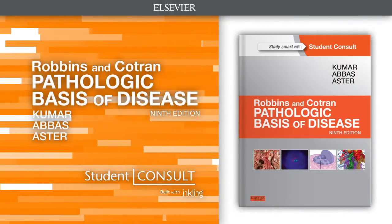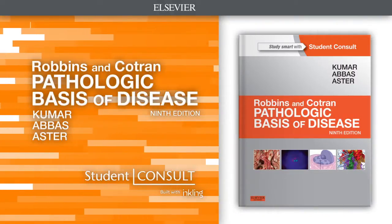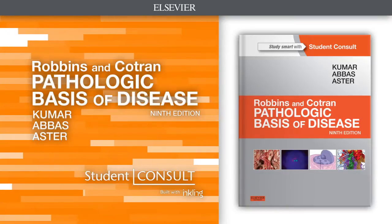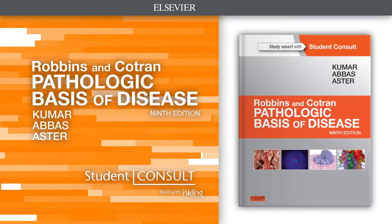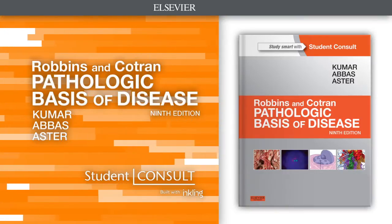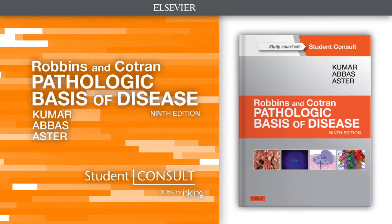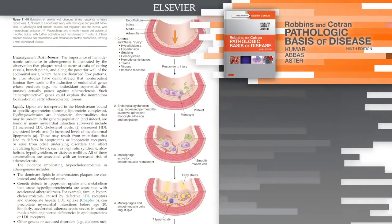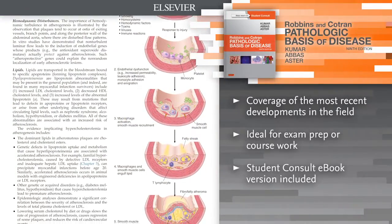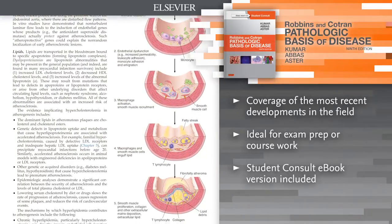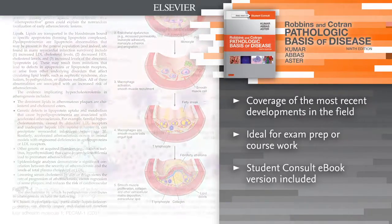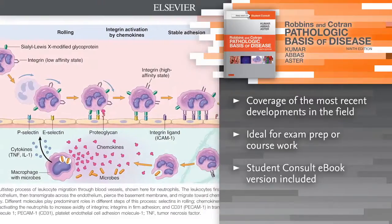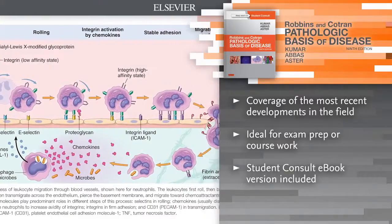Introducing Robbins and Cotran Pathologic Basis of Disease, 9th edition. Dependable, current, and complete. This is the perennially best-selling text that you'll use long after your medical student days are behind you.